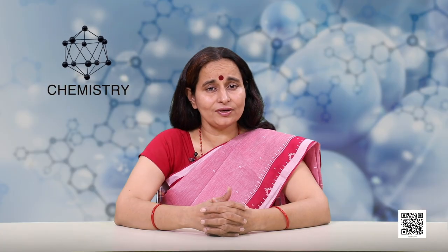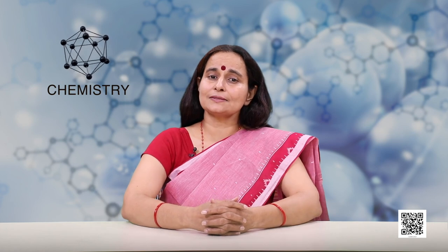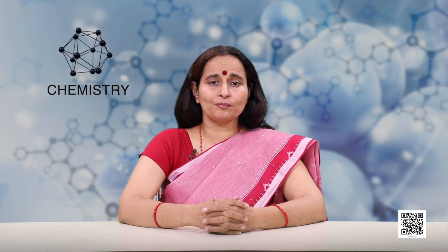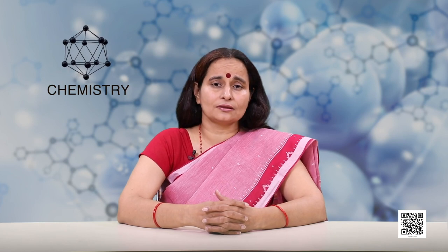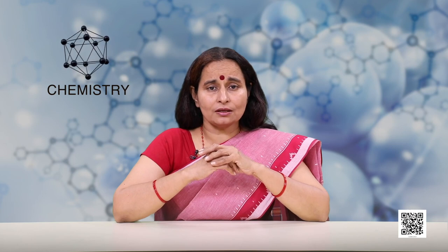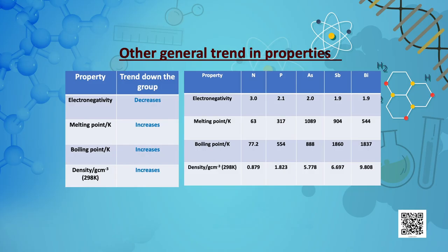Because of the extra stable half-filled electronic configuration and smaller size, the ionization enthalpy of group 15 elements is much greater than that of group 14 elements in the corresponding periods. Electronegativity also decreases down the group; however, amongst the heavier elements the difference is not that pronounced. All the elements of this group are polyatomic. Dinitrogen is a diatomic gas while all others are solid. Boiling point and density increase down the group, but the melting point increases up to arsenic and then decreases up to bismuth.